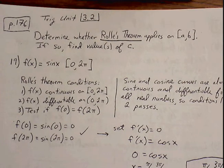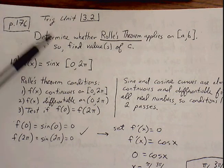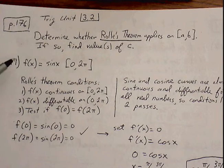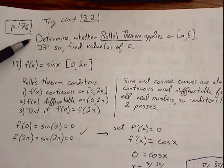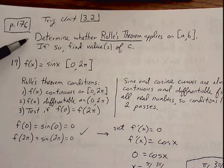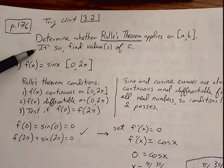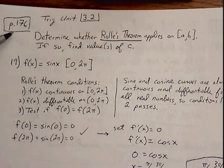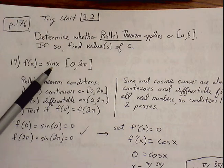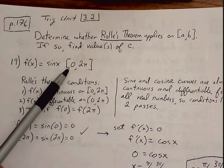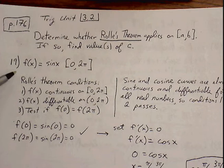In this video I'm going to go over trig problems that involve Rolle's Theorem and Mean Value Theorem. We're going to determine whether Rolle's Theorem applies on a closed interval from a to b. If so, we're going to find the values of c. Let's look at number 19 on page 176 first. We're given our function sine of x between the closed interval of 0 and 2 pi.